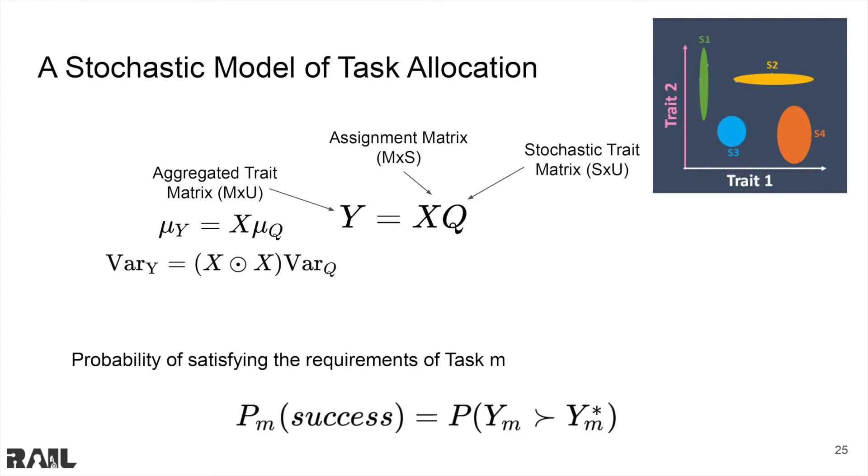Again, in this work, we are concerned with the probability of satisfying the trait requirements for task M. Y_M is a column in Y and is a multivariate Gaussian vector. Y_M star is a vector of the trait requirements for task M. In other words, Y_M is a vector defining how much trait is allocated to task M, and Y_M star is a vector defining how much trait is required to complete task M.